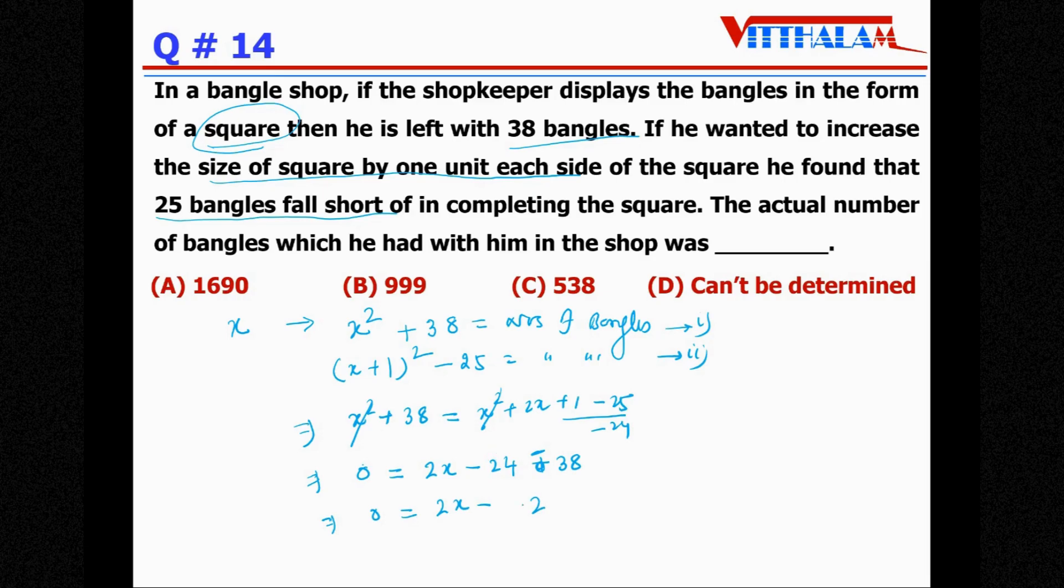Therefore, 0 = 2x - 62. Therefore, 2x = 62, so x = 31. That's the side of the square. But what is being asked? The actual number of bangles.